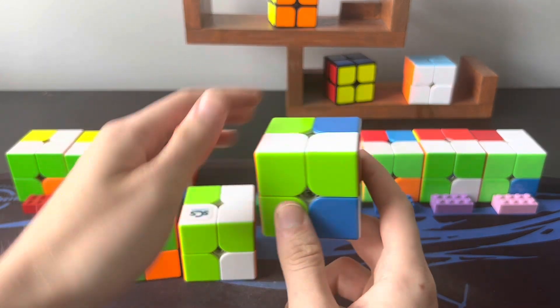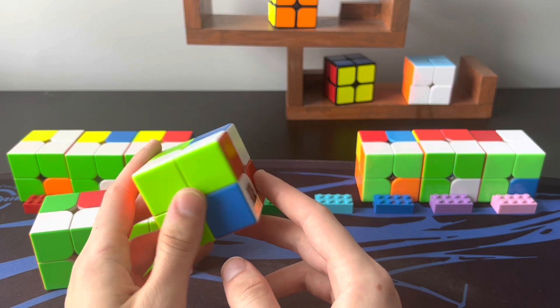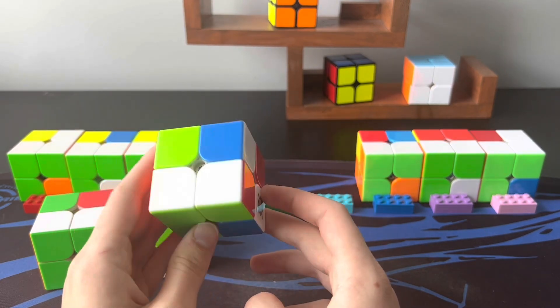And then cases like here, which is an LS6, you again swap this corner with this corner and recognize it like a TCLL minus.